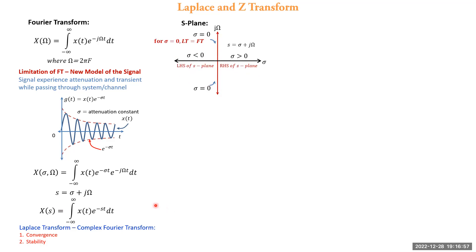We need to understand the concept of the s-plane, which defines the region of convergence. The s-plane is a complex plane where s = σ + jω, and it has three main areas. The first is the left-hand side of the s-plane for which σ < 0. The second region is σ > 0, which forms the right-hand side of the s-plane. The third region is the jω axis for which σ = 0.